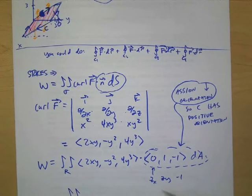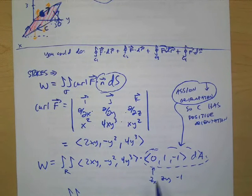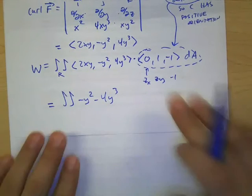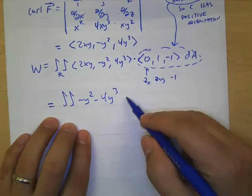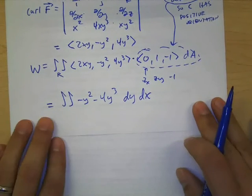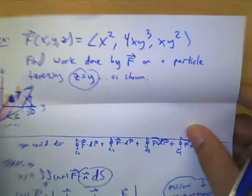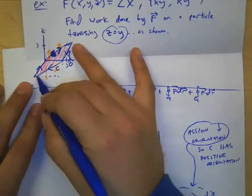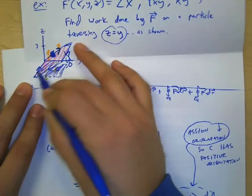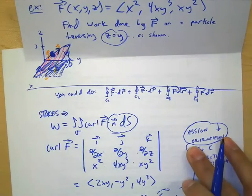As far as integrating, that's not too bad. When you multiply this dot product out, you get negative Y squared minus 4Y cubed. And let's just do dy dx. And now our bounds should be pretty straightforward. If you go back to our picture, do you guys see the region R? What would the bounds be for X and Y?